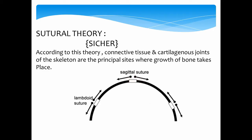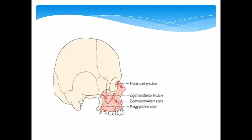In this picture, he explained that the circummaxillary sutures bring about a forward and downward movement of the mandible by their growth. When the circummaxillary sutures are growing, they are moving the mandible downward and forward, as you can appreciate in the diagram.